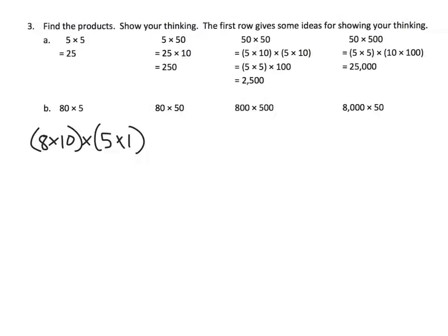Using the associative and the commutative property, we can regroup and rearrange and get 8 times 5 times 10 times 1, which ends up giving us 40 times 10. We now know from the previous module that 40 times 10 is equal to 400.